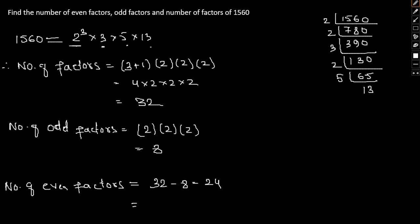Or this can also be done by simply taking into account, we will exclude 1 power of 2 from here, so that is we'll take 2 square into 3 into 5 into 13. We have excluded one of the 2, so therefore number of even factors would be 3 into 2 into 2 into 2, that is 24. So either way you can find.